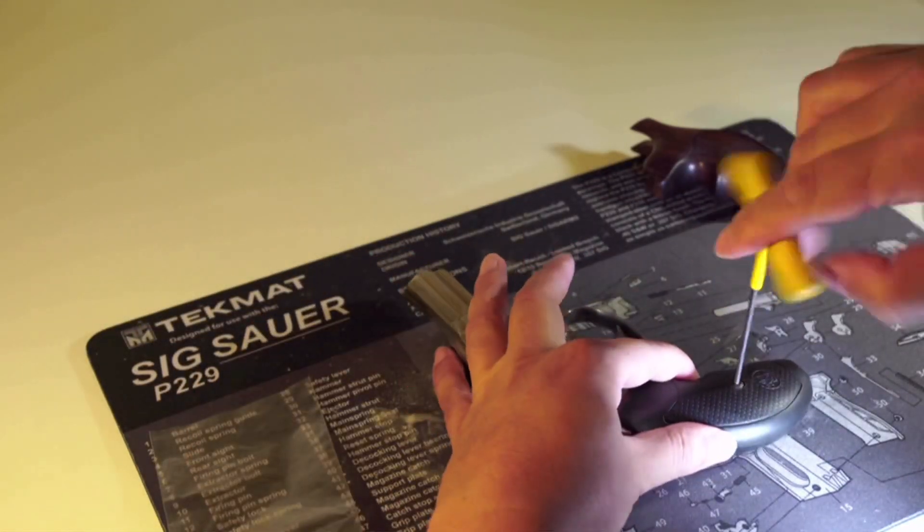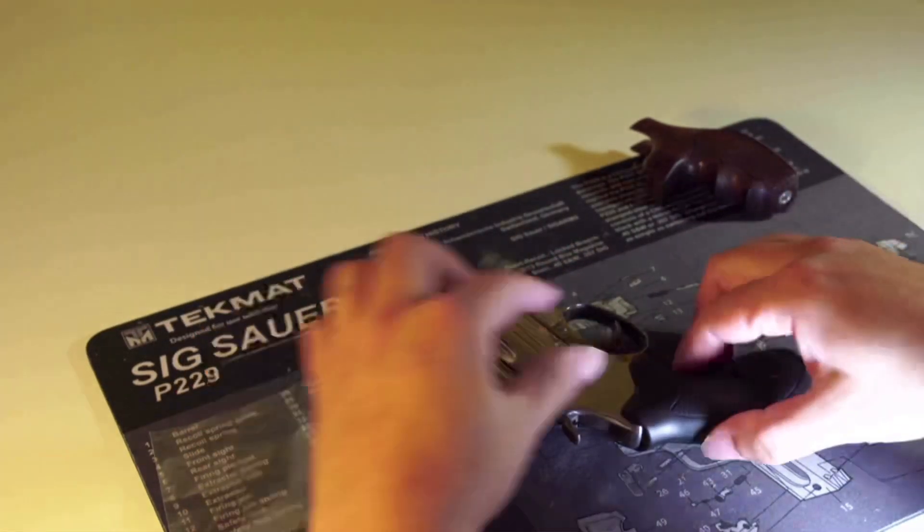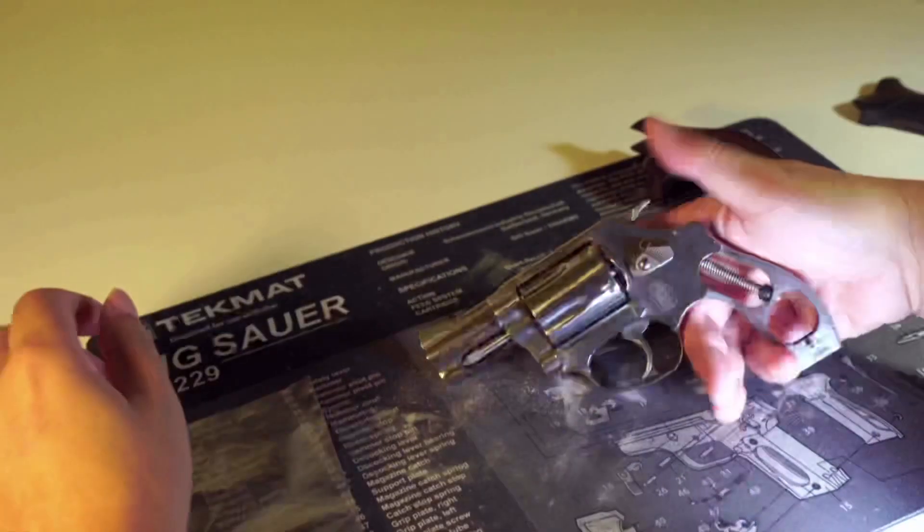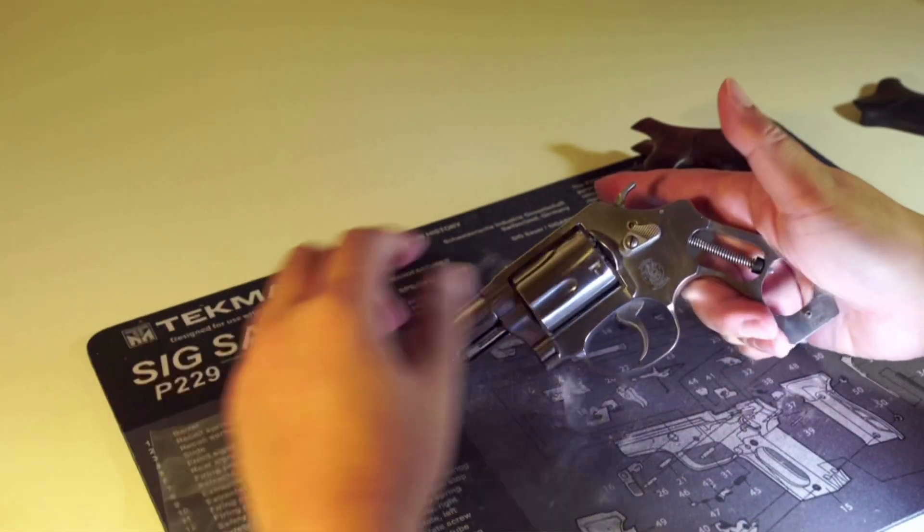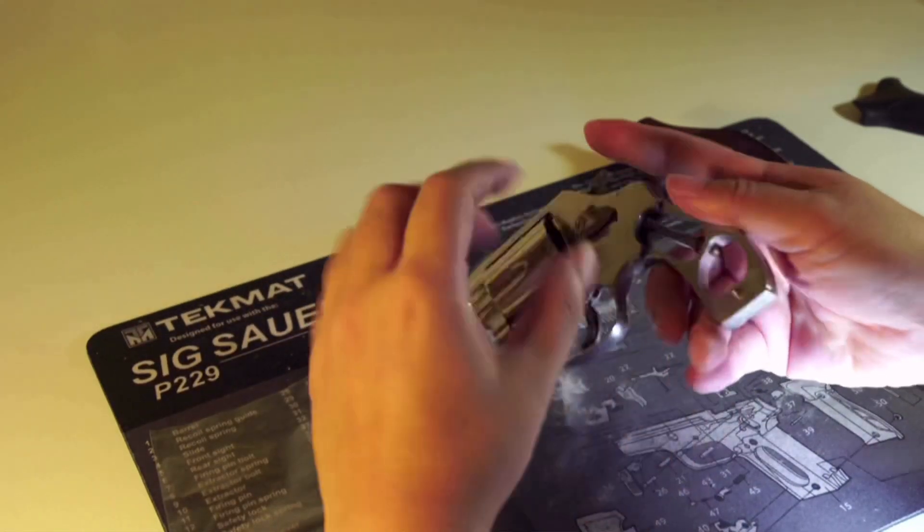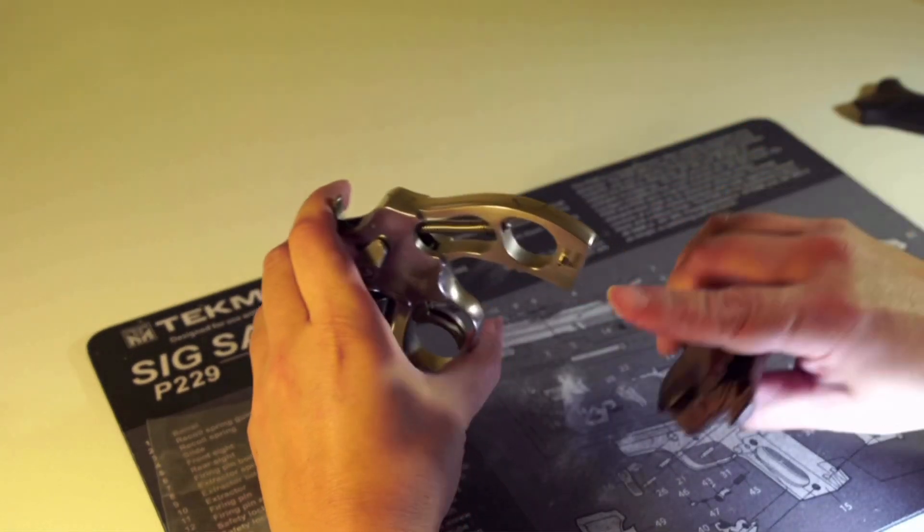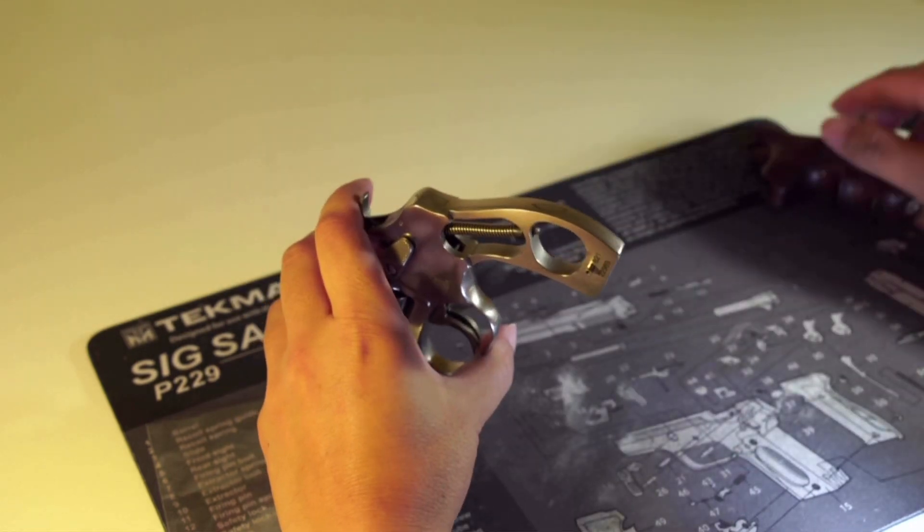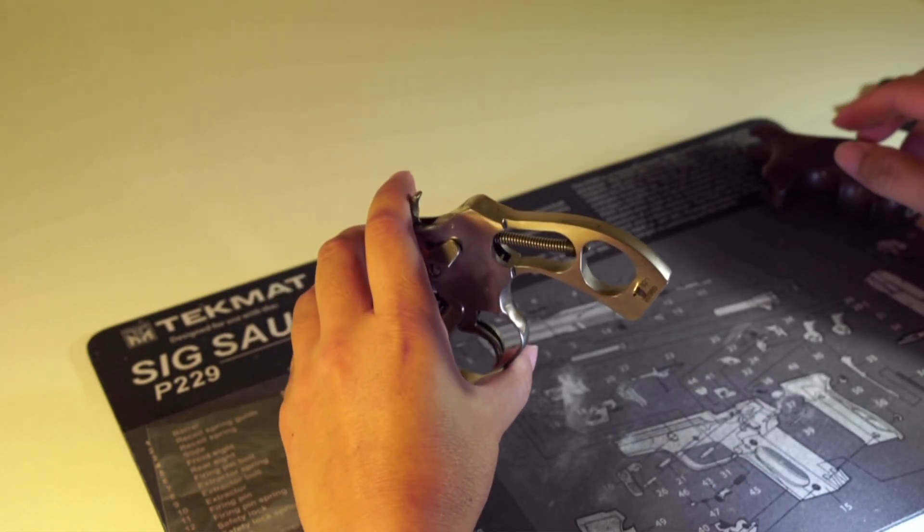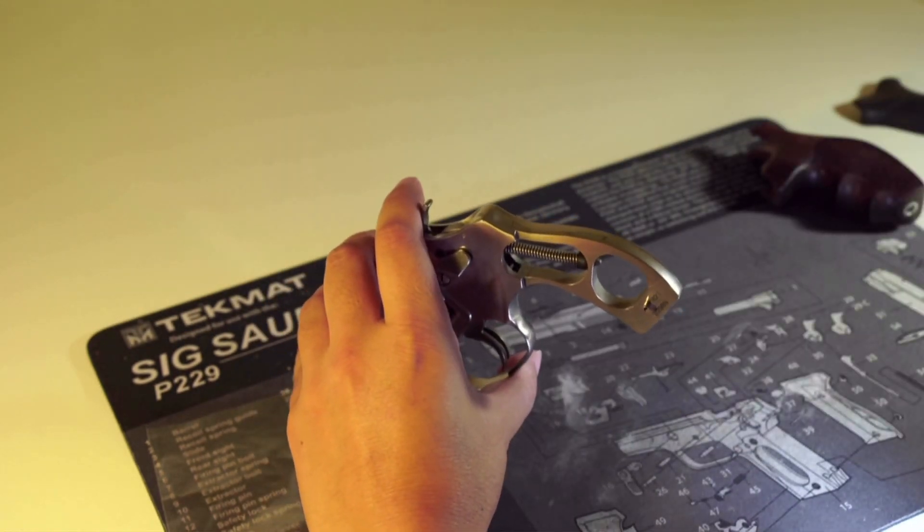To remove this grip is also very easy. You just need to unscrew and take the two pieces away. Now comes the tricky part. To install the Hogue grip, you have to do something.